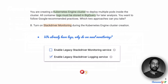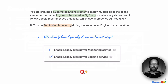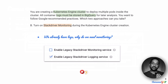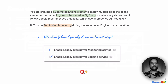How about option B? Option B suggests that we turn on Stackdriver Monitoring during the Kubernetes engine cluster creation. But we only need logging, not monitoring. We already have logs and that is all that is required, so we can eliminate option B.